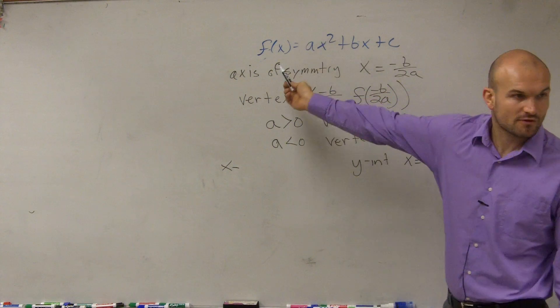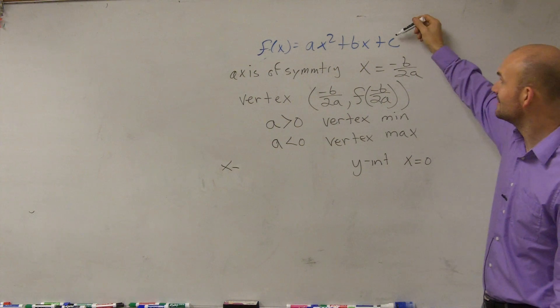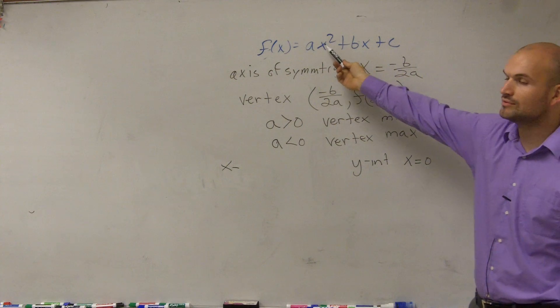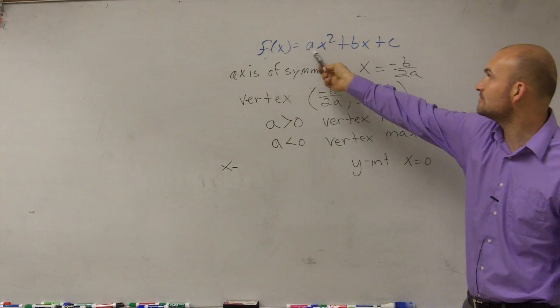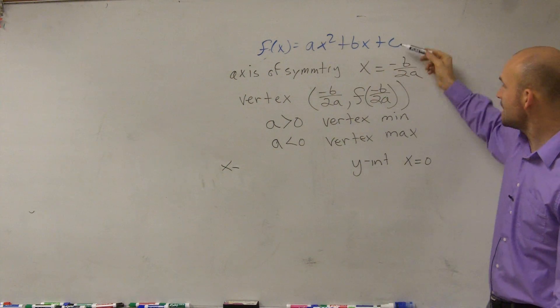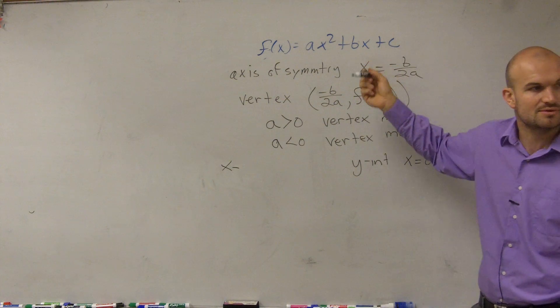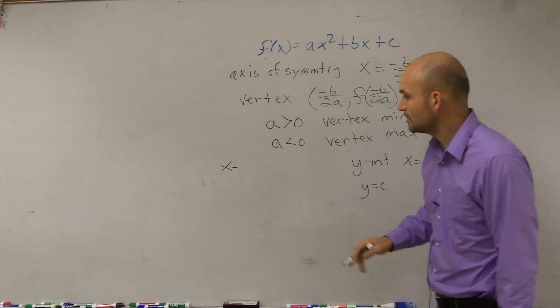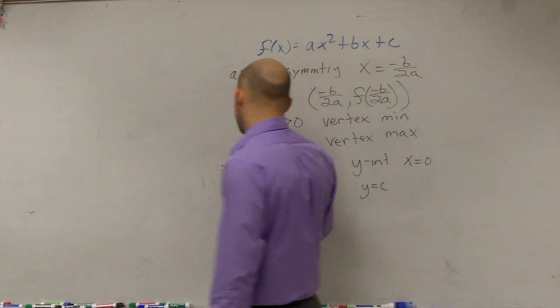So what we did is we put 0 in for x. And what we noticed was the y-intercept is constant. Because 0, anytime you're multiplying, you're going to get rid of your a and b. So your y-intercept was always what c was equal to. So we'd always say y equals c.